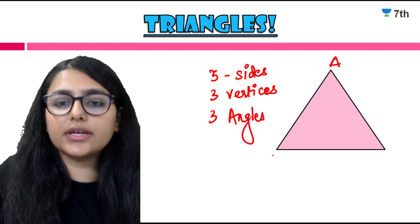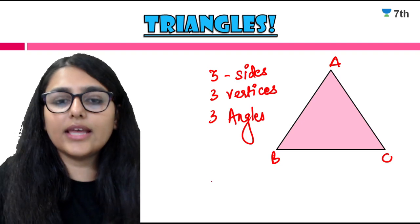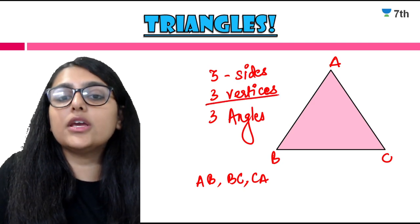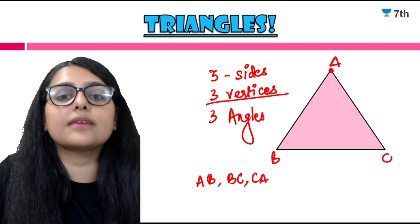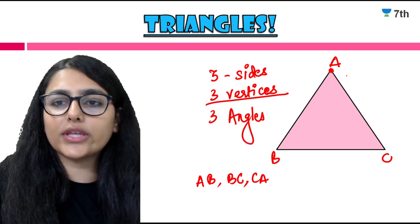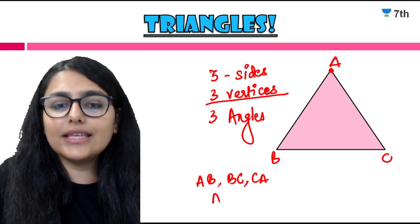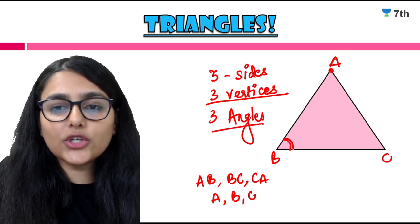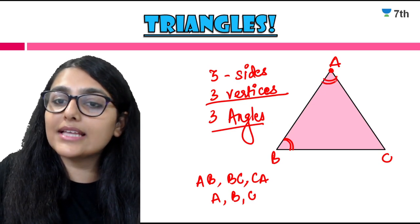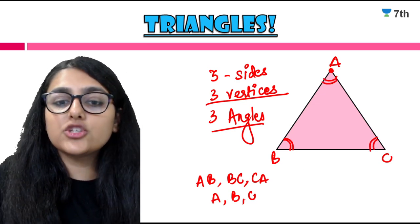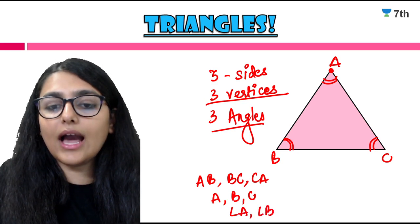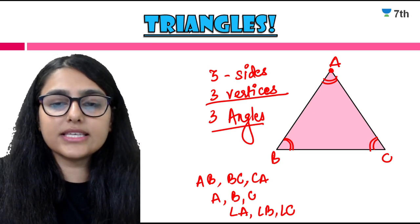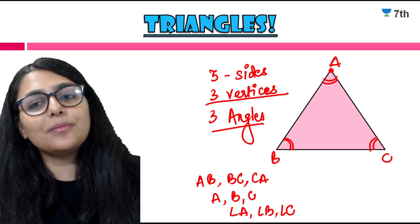If I name the triangle ABC, then the sides are AB, BC, and CA. The 3 vertices are the common points where two line segments meet — those are A, B, and C. At the end we have 3 angles. So basically, a triangle is a polygon — a closed figure made up of line segments. You can also say it is a 3-sided polygon.